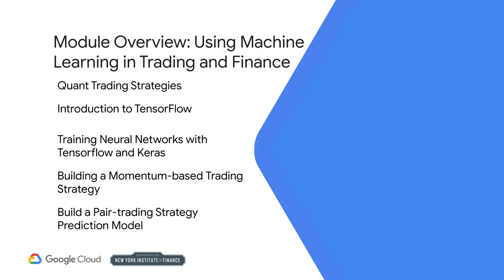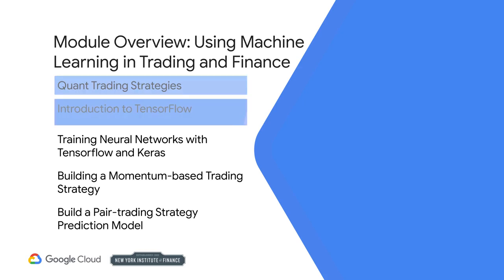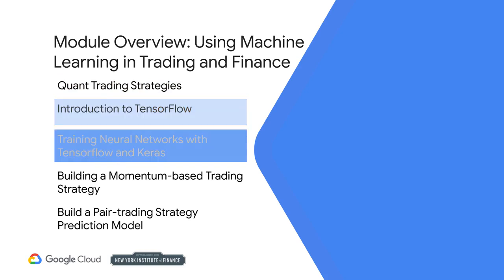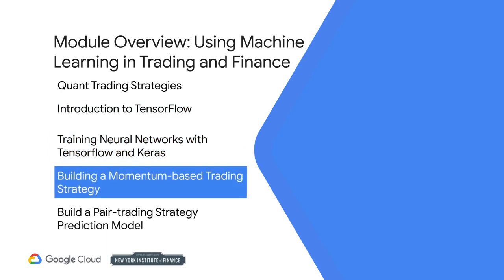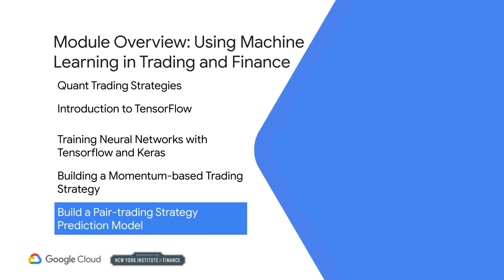Now let's cover the specific module content that you'll learn in this course. There are five modules. Module 1, Quant Trading Strategies. 2, Introduction to TensorFlow. 3, Training Neural Networks with TensorFlow and Keras. 4, Building a Momentum-Based Trading Strategy. And lastly, in 5, you'll build a Pair Trading Strategy Prediction Model.